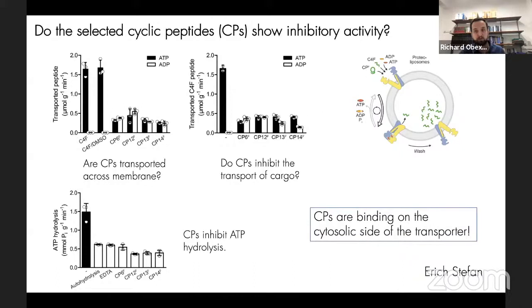However, since peptide transport is also correlated with ATP hydrolysis, peptides not being transported could still mean that ATP could be hydrolyzed. So the next question was, is ATP hydrolyzed? Eric performed an ATP hydrolysis assay and he could show that the cyclic peptides reduced the ATP hydrolysis down to the level of autohydrolysis. What we can conclude from these experiments is that the CPs basically completely shut down the activity of the TMRAB transporter. In addition, having used liposomes, it must mean that the CPs are binding on the cytosolic side or on the nucleotide binding domain side as they are also not transported into the liposomes.